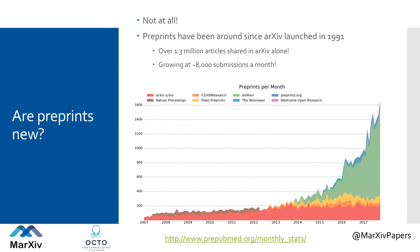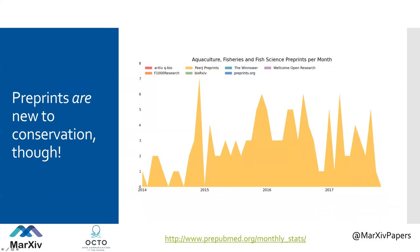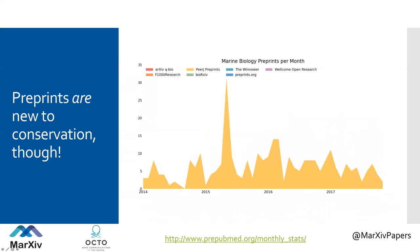Are preprints new? Preprints are not at all new — they've been around since at least 1991. There are 1.3 million articles in Harvard's archive alone, growing at about 8,000 submissions per month. However, preprints are new to the ocean sciences and climate change sciences. Looking at environmental sciences, in 2017 we had maybe 20 or 30 preprints for the entire year. For aquaculture, fisheries, and fish science specifically, it's even worse — about six papers added in a given month. Marine biology isn't much better, with only five to ten. We have a lot of room to grow.